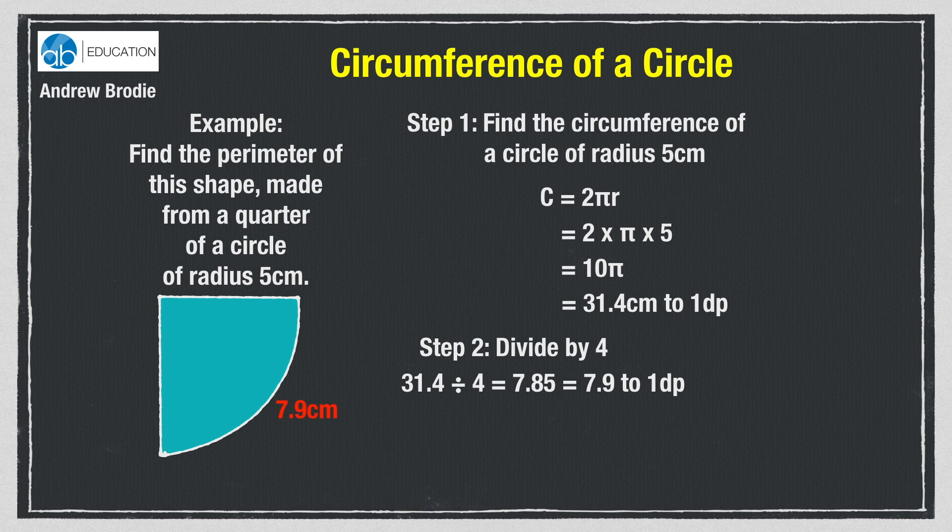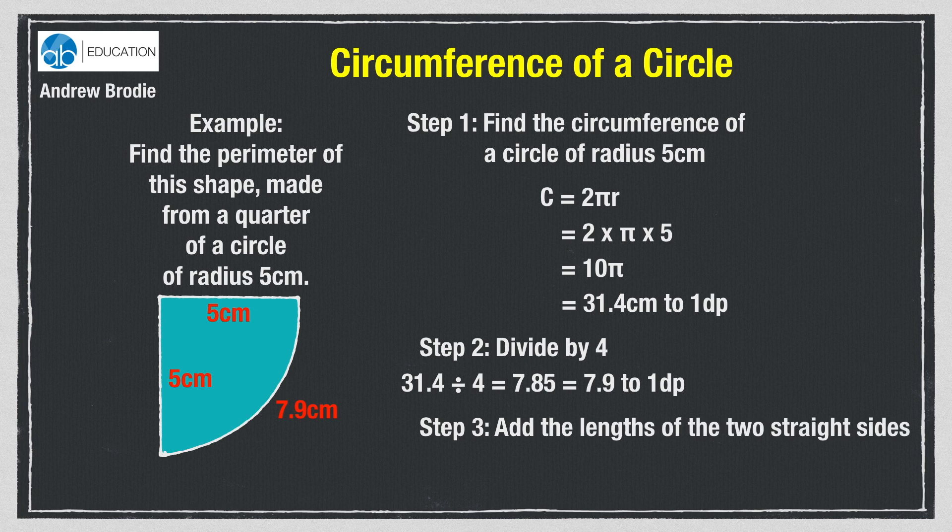That's the curved part of our shape. Each of the straight lines must be 5cm long, as they are each a radius of the circle. Step 3 is to add the three lengths together. We come up with the answer 17.9cm.